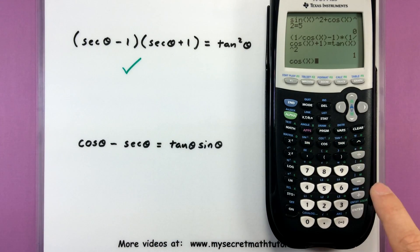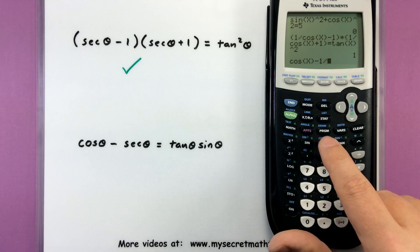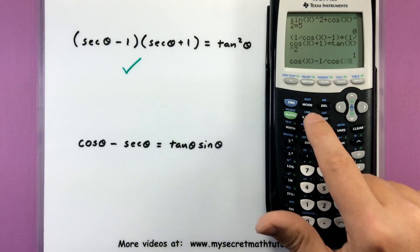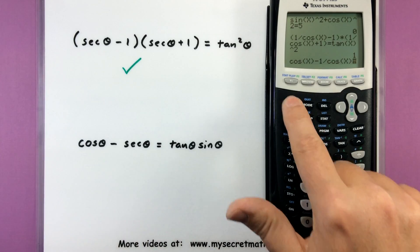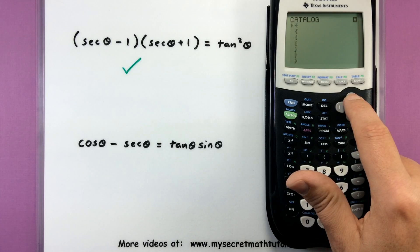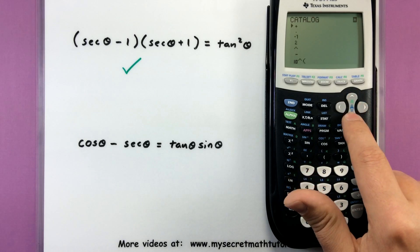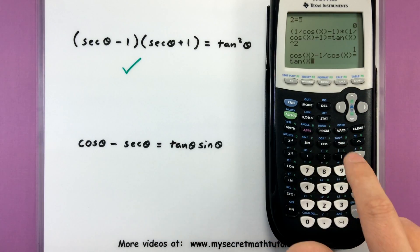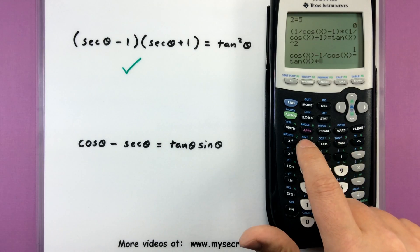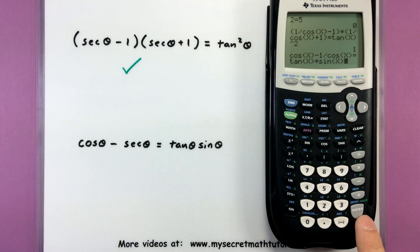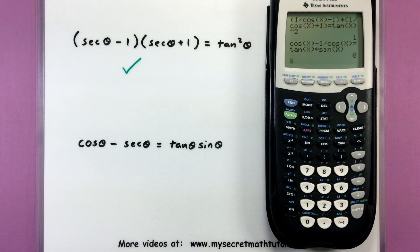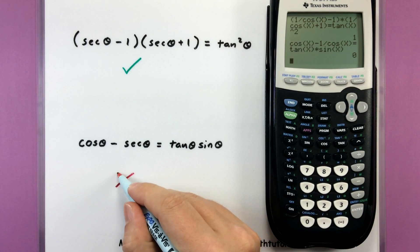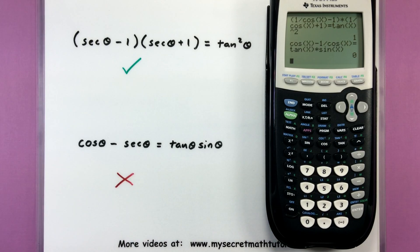So cosine of x minus one divided by cosine of x is all of that equal. So second catalog to tangent of x multiplied by sine of x. This time it's returning a zero, and that's my indication that it is false. That is not a true identity. If that's really what I got from my answer, I want to go back and check all of my steps to make sure where my mistake is.